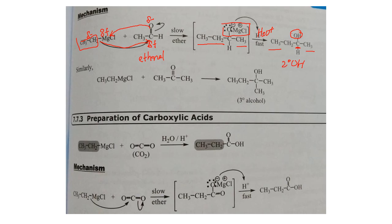The same concept applies when the Grignard reagent reacts with a ketone such as propanone, forming a tertiary alcohol. You can draw the C=O of the ketone clearly. To write it step by step: step (i) — Grignard reagent reacts with the carbonyl compound to form an intermediate; step (ii) — hydrolyze with H3O⁺ to produce the alcohol.